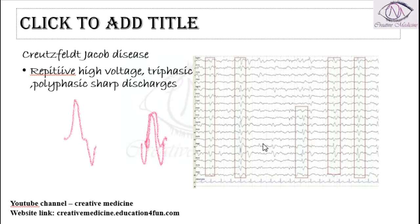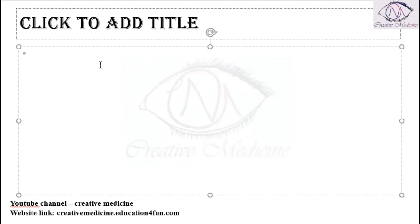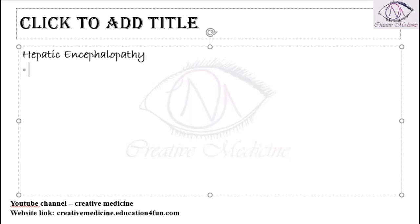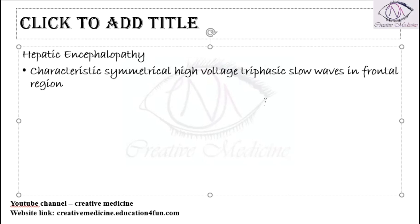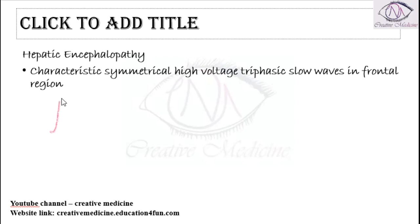This is the EEG of Creutzfeldt-Jakob disease. We also have the EEG of hepatic encephalopathy. In hepatic encephalopathy, there is presence of characteristic symmetrical high voltage triphasic slow waves in the frontal region.